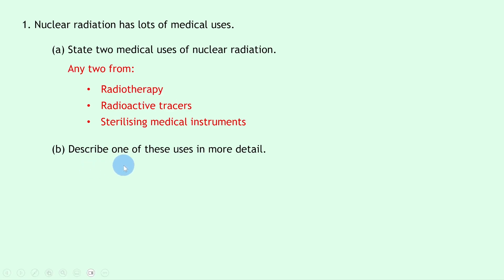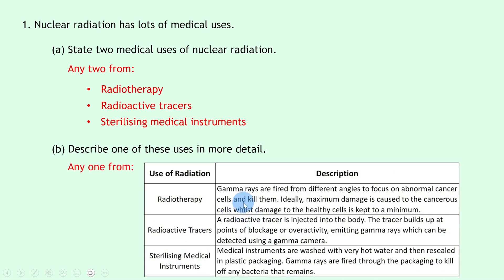Part b says to describe one of these uses in more detail. For radiotherapy, you could say that gamma rays are fired from different angles to focus on abnormal cancer cells and kill them. Ideally, maximum damage is caused to the cancerous cells whilst damage to the healthy cells is kept to a minimum.